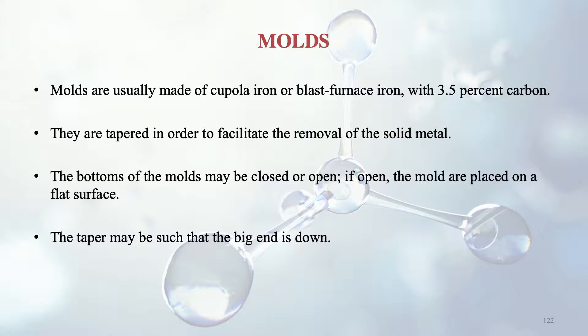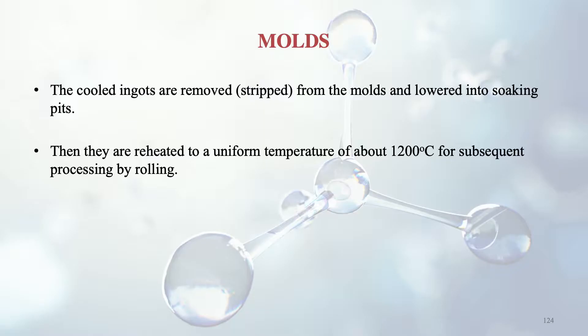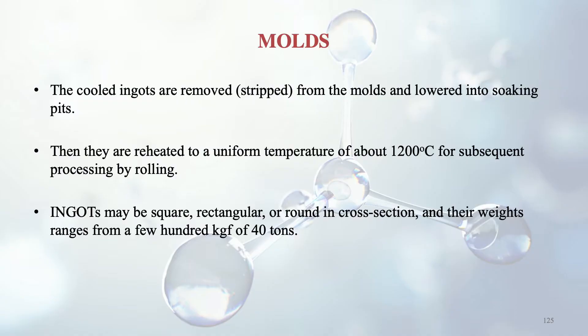The taper may be such that the big end is down — the larger cross-sectional area at the bottom, lesser at the top. The cooled ingots are stripped from the molds, lowered into soaking pits, and reheated to a uniform temperature of about 1200°C for subsequent processing by rolling. Ingots may be square, rectangular or round in cross section, and their weights range from a few hundred kg to about 40 tons.